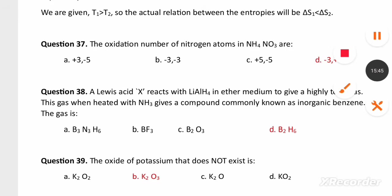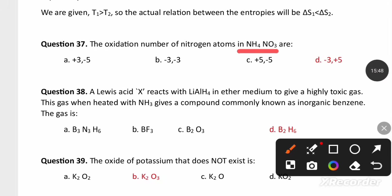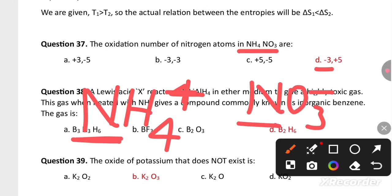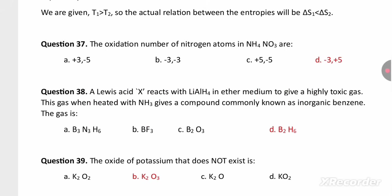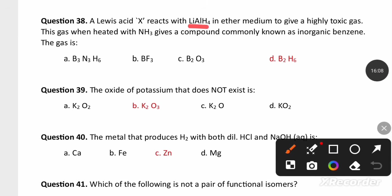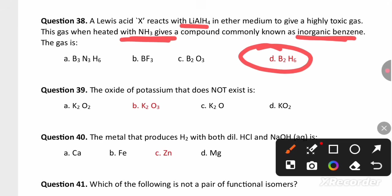The oxidation number of nitrogen in NH4NO3: when dissociated, NH4+ has nitrogen in the −3 oxidation state, and in NO3− nitrogen is in the +5 oxidation state. Option D is the right answer. Lewis acid reacts with lithium aluminium hydride in ether to give a highly toxic gas (diborane, B2H6). This gas on heating with ammonia gives a compound known as inorganic benzene.